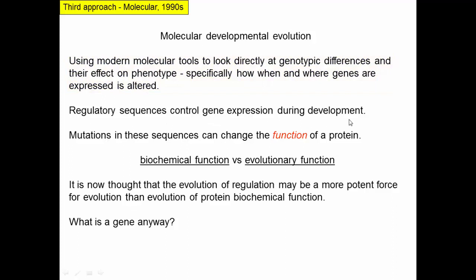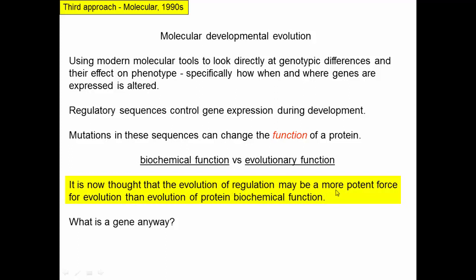Regulatory sequences control gene expression during development. Mutations in these sequences can change the function of a protein. A protein has a biochemical function — what chemical reaction does it perform — but it also has an evolutionary function: what is it doing that contributes to the fitness of the organism? A protein may acquire a different evolutionary function even if its biochemical function is exactly the same, just by being expressed in a different tissue or at a different time during development. We're now beginning to think that the evolution of regulation may be a more potent force for evolution than the evolution of protein biochemical function, because in many organisms their proteins do pretty much the same thing — it's when and where they act that might make all the difference.